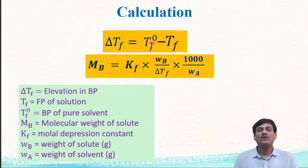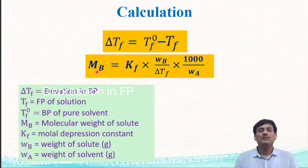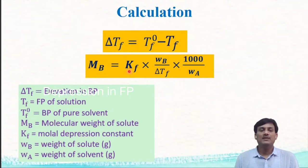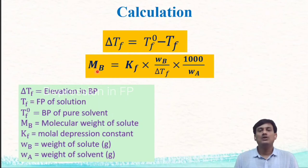We record the freezing point of the pure solvent and the freezing point of the solution. The difference between the two gives the depression in freezing point, delta Tf. Using the equation Mb = (Kf × Wb × 1000) / (delta Tf × Wa), we can calculate the molecular weight of the solute, where Kf is the molar depression constant of the solvent, Wb is the weight of solute in grams, Wa is the weight of solvent in grams, and delta Tf is the depression in freezing point.